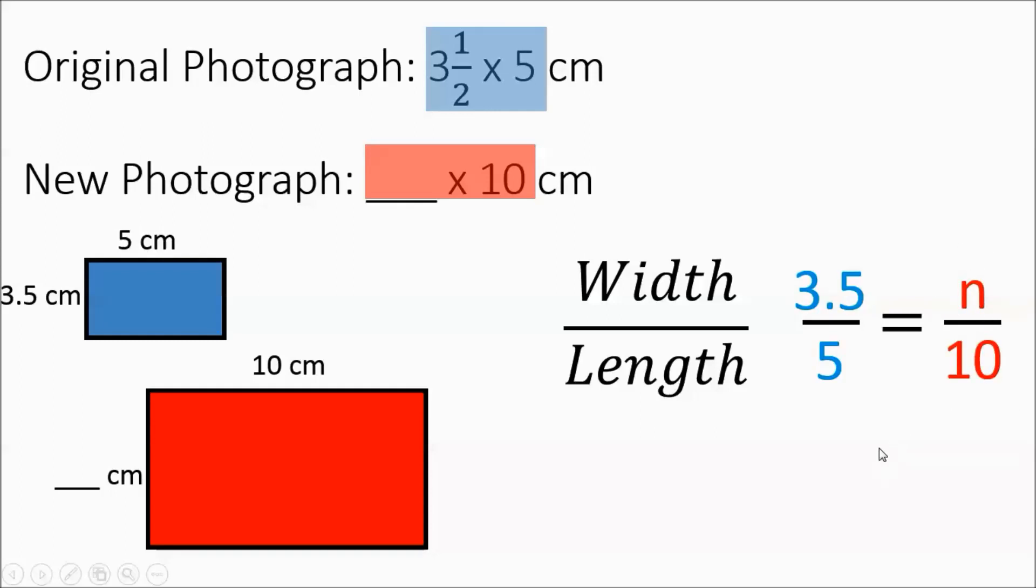So then we can apply our cross-product rule, 5 times n, 3 and a half times 10, and then divide by 5, you get n equaling 7. So 7 is going to go in all those missing spots. We'll move on.